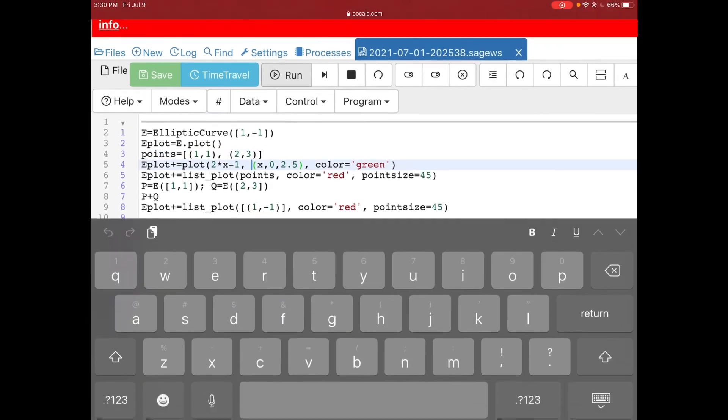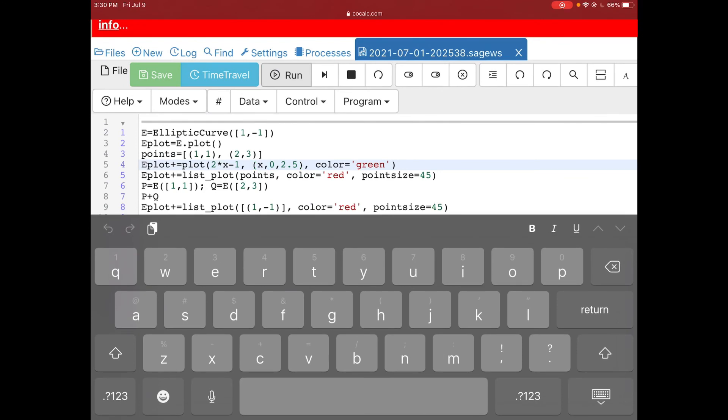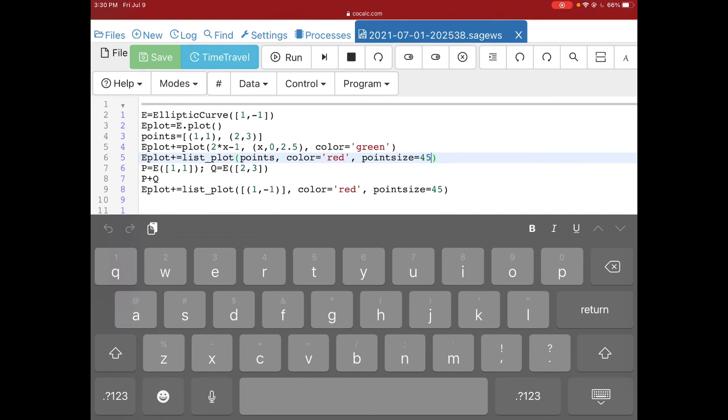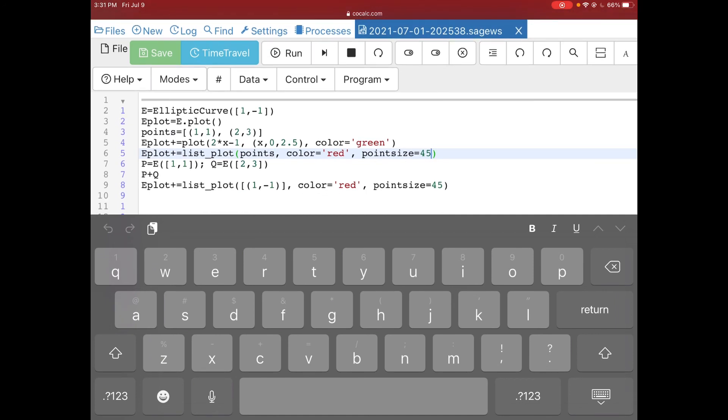This in the middle, you see this business x, 0, 2.5. That just controls my interval, like what x value I'm considering, and I colored it. And what I'm going to do is, by the way, this plus equals, that's going to add the following to eplot. So this is telling it to add this plot, blah, blah, blah, to eplot already. Same thing here. I'm going to add the following. So this command list_plot will take my points, (1,1) and (2,3) above, and it's going to throw them in the plot. And I can change the color and how thick the points are too and how big they are.